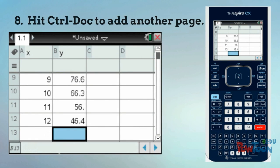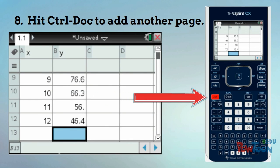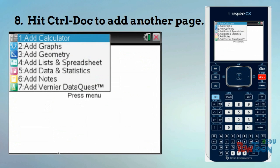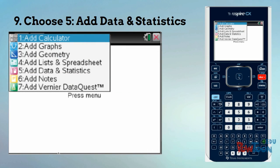Next, we'll need to add a page to our document. To do that, hit the Control button and then the Dock key. A new menu will pop up. This time select 5 for add data and statistics.